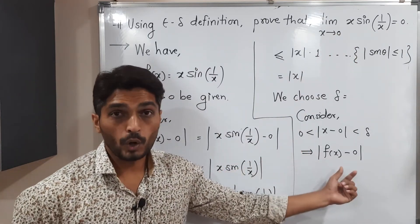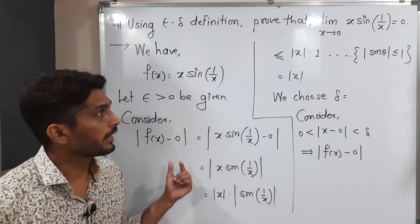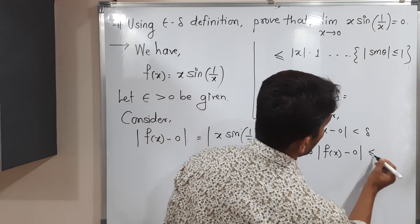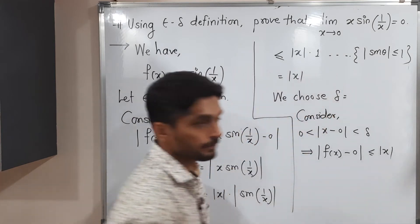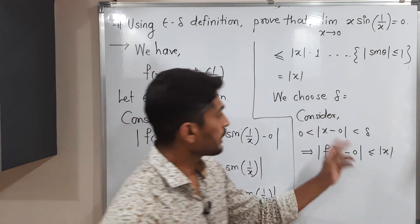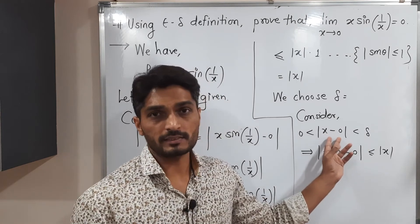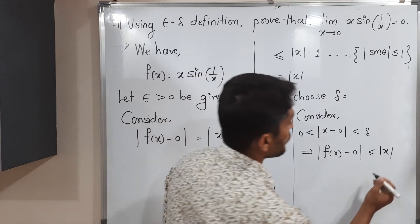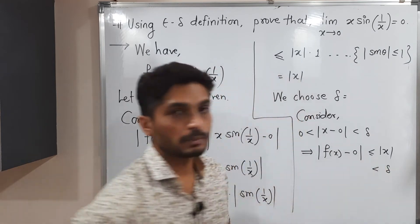This mod we have already solved. We have got its value is less than or equal to mod x. So I can write this is less than or equal to mod x. Mod x means mod x minus 0. This is also mod x. Now x minus 0 is x itself. So mod x is less than delta. So this is less than delta.